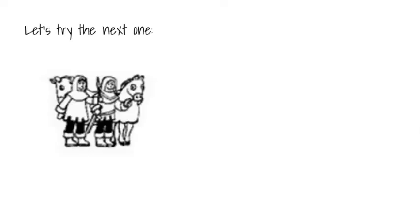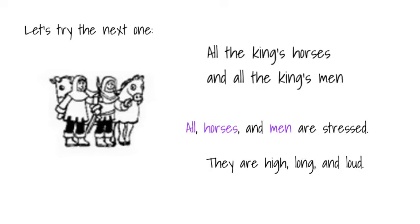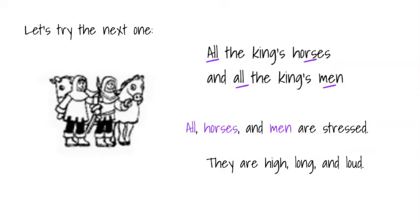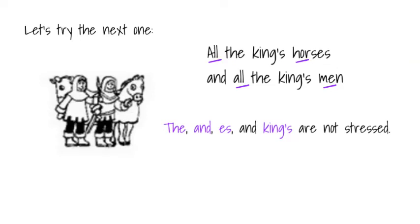Let's try the next one. All the king's horses and all the king's men. 'All,' 'horses,' and 'men' are stressed. They are high, long, and loud. All the king's horses and all the king's men. The 'the,' 's,' and 'king's' are not stressed — they are fast and quiet. All the king's horses and all the king's men.